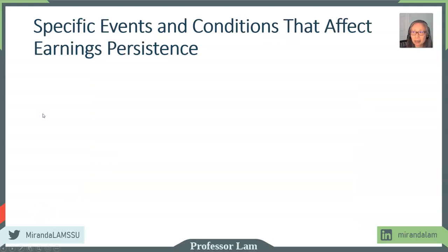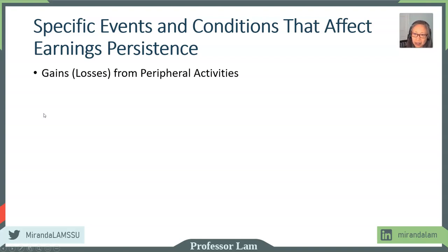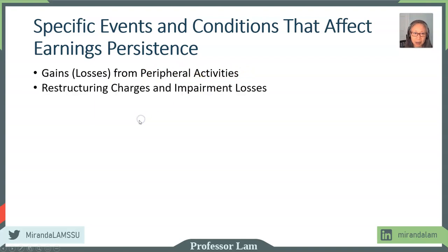Here are some special events. We already mentioned gains and losses from peripheral activities. We need to look year to year — are these recurring? Are these peripheral activities relatively consistent? Also, restructuring charges and impairment are considered part of continuing operations. We want to look at how persistent those are.